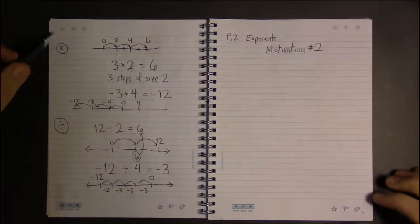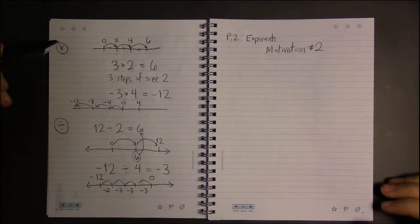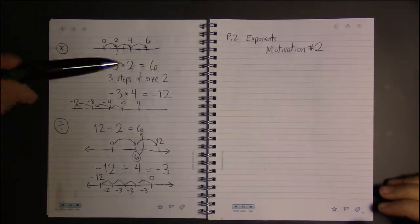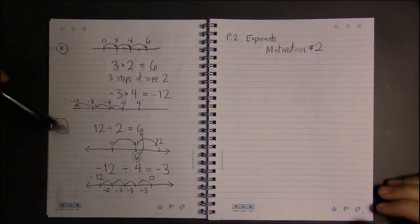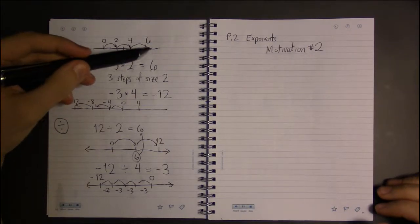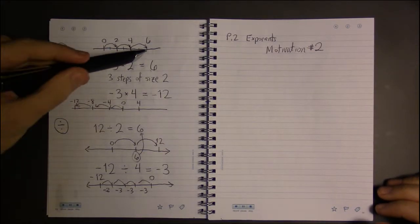All right, so we just looked at a way to interpret and see arithmetic—addition, subtraction, multiplication, and division—through steps on a number line.